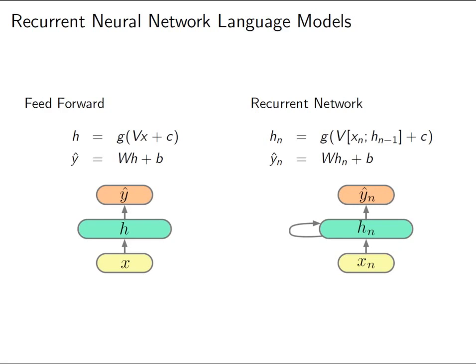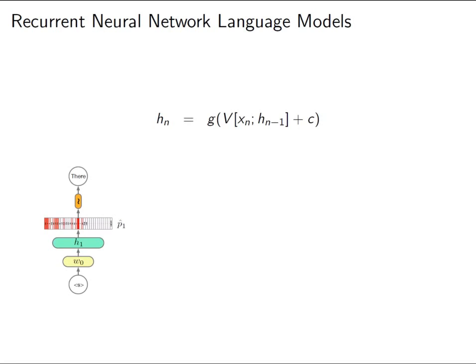On the left we have our old friend the feed-forward neural network. The recurrent network looks the same, just with an extra loop: the hidden layer is now a function of the previous hidden layer. So where we had Vx + C, we now have V applied to x concatenated with the previous hidden layer, plus C. We tie together all hidden layers over time, allowing the model to summarise all previously seen information.